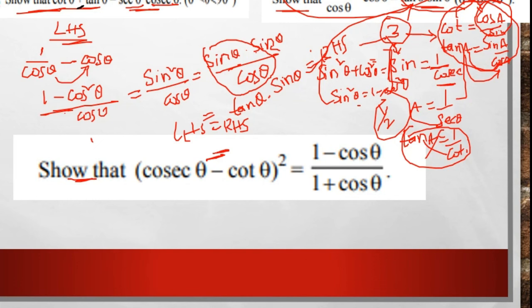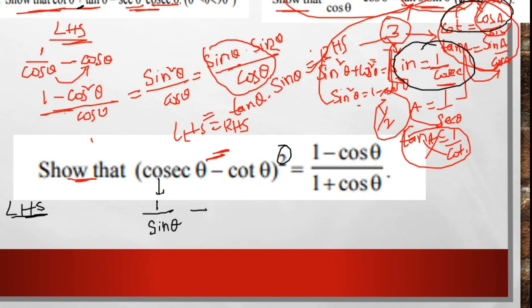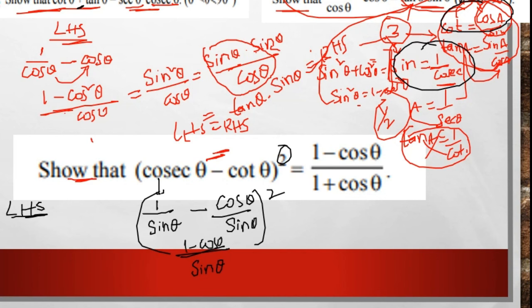LHS = RHS. On the right-hand side, cosec = 1/sin. Write minus cot, where cot = cos θ/sin θ, whole squared. So we get (1 − cos θ/sin θ)², with sin θ as the common denominator, giving (sin θ − cos θ)²/sin²θ, which equals (1 − cos θ)²/sin²θ in the numerator and denominator.